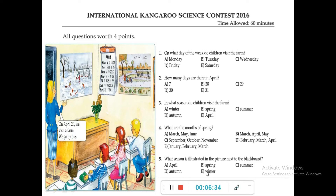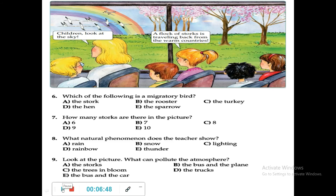This was all about page number 1. Now move on to the next page. Questions 6, 7, 8, and 9 are on this page. Look at this — children, look at the sky. You can see a bird and a plane as well. A flock of storks is traveling back from the warm countries. Traveling back means moving from one place to another — this is also called migration. During winter, some birds migrate.